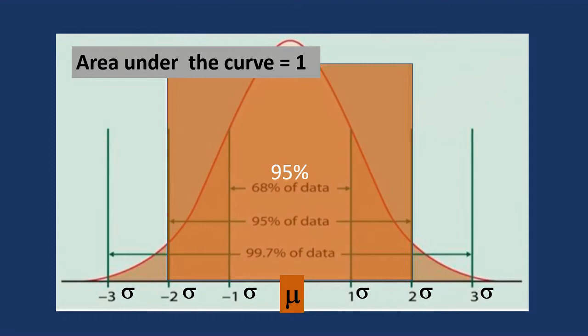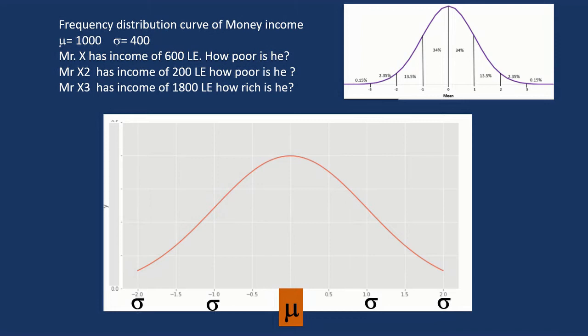Now, let's have this example. Suppose this is the frequency distribution curve of money income for a population. We have a mean 1,000, standard deviation 400. Now, first question, suppose we ask you, Mr. X has an income of 600 pounds. How poor is he?